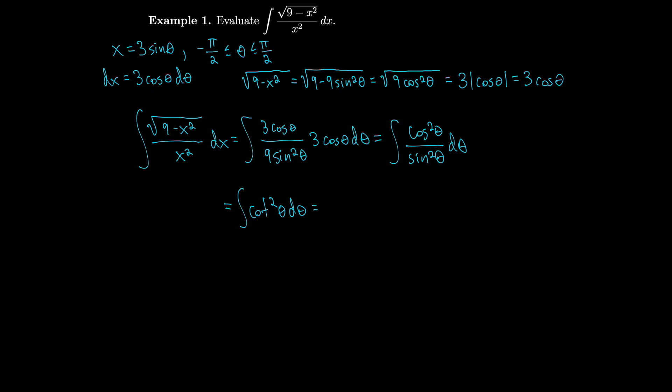We can use an identity on cotangent squared: just as tangent squared equals secant squared minus 1, cotangent squared equals cosecant squared minus 1. So we integrate cosecant squared minus 1. The antiderivative of cosecant squared is minus cotangent (since the derivative of cotangent is minus cosecant squared), giving us minus cotangent theta, and the antiderivative of 1 is theta, plus C.